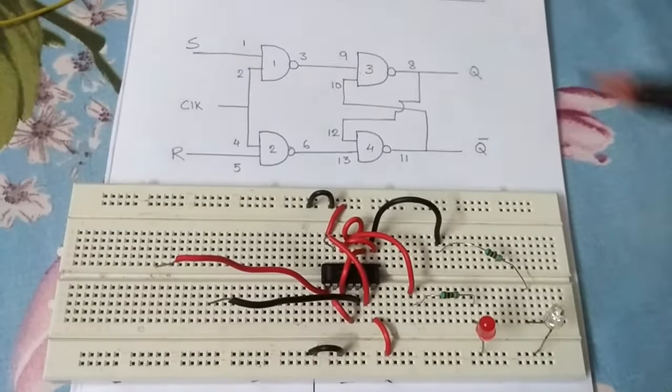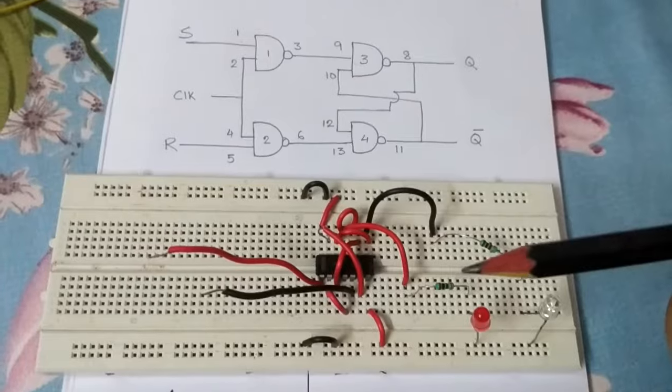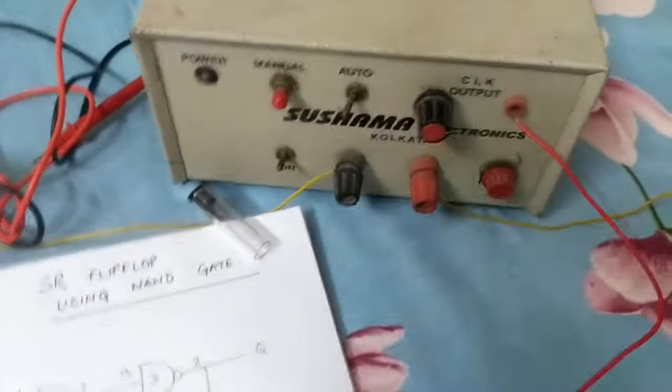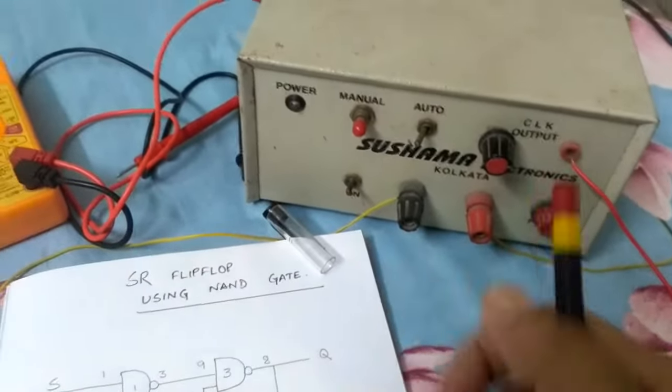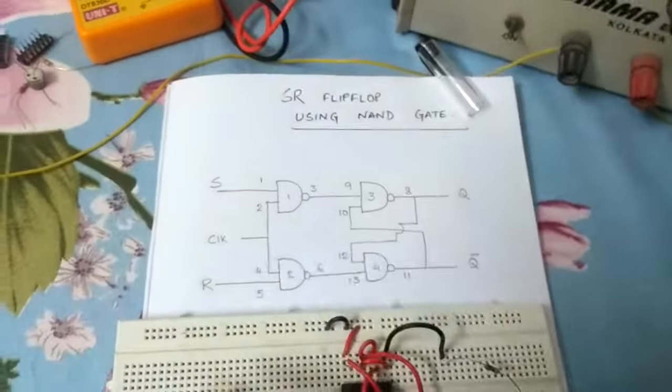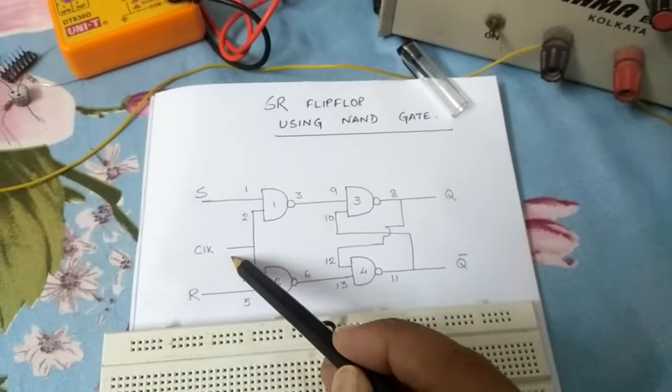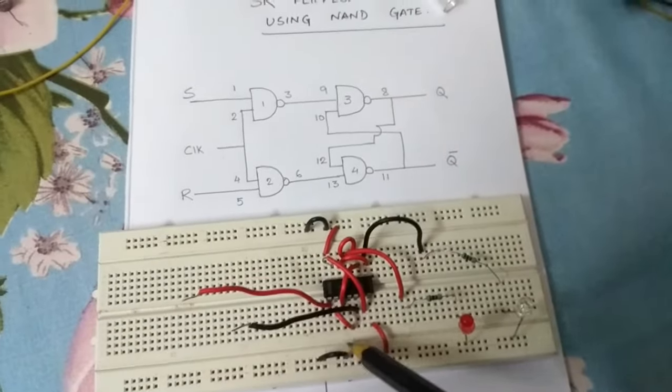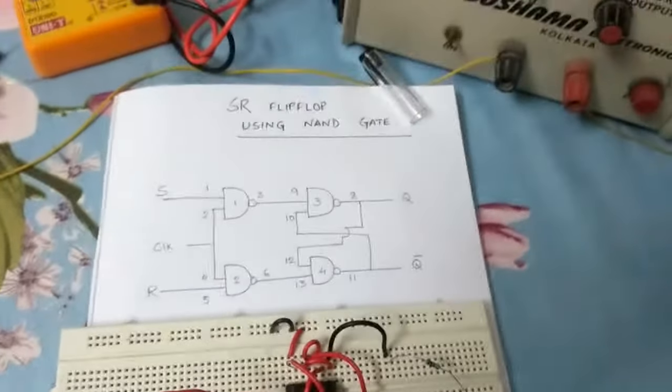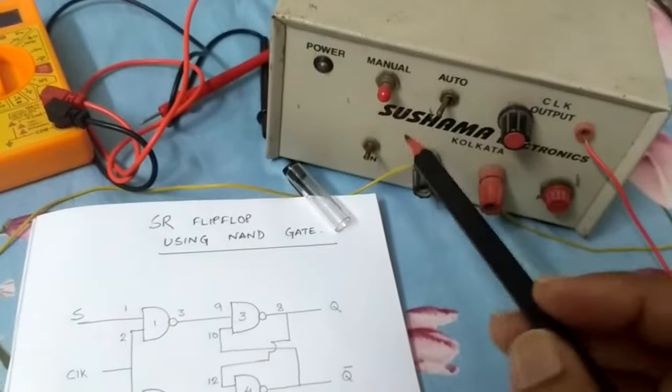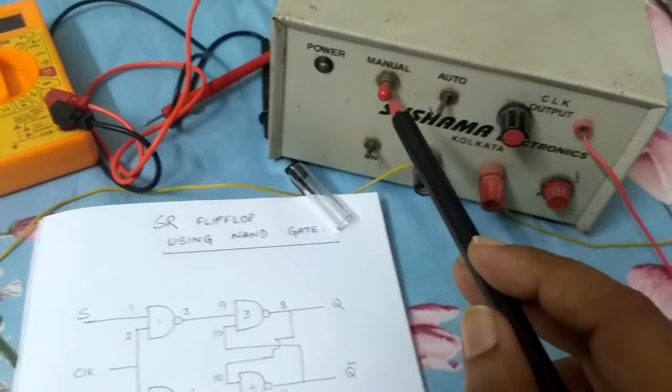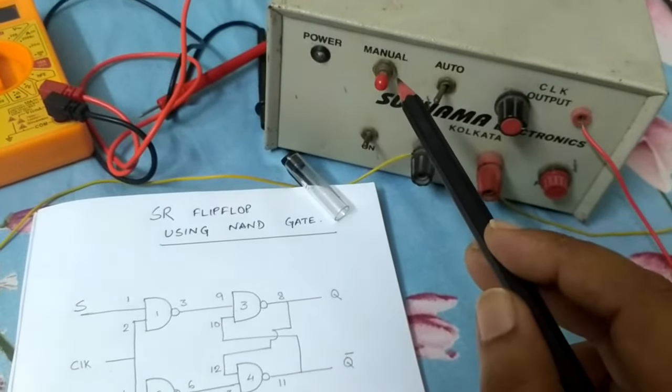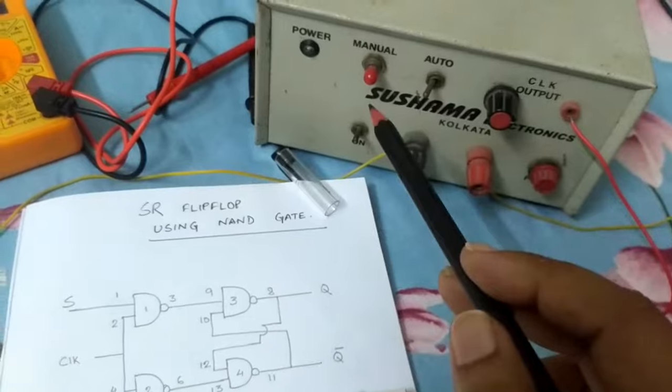So this is the entire circuitry of SR flip-flop using NAND gate. I will be using this power supply where I have clock system over here. I'll place the clock in this part of the picture as you can see, that is in pin 2 and 4 connections. There is a manual clock and there is an auto. I'll be using manual one so that it's better for you all to understand.